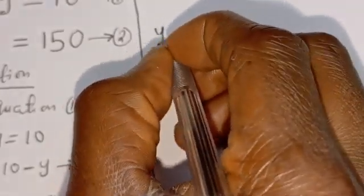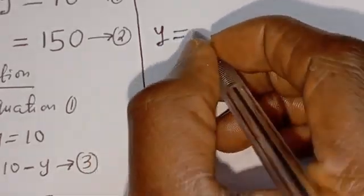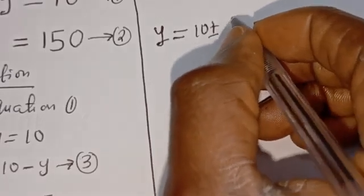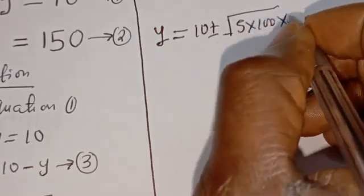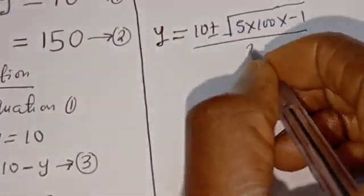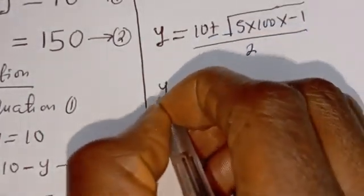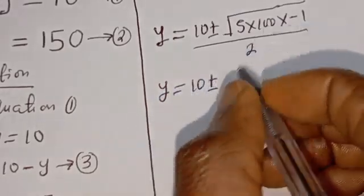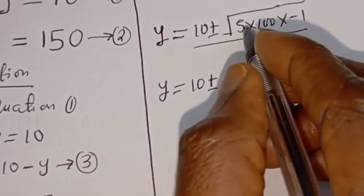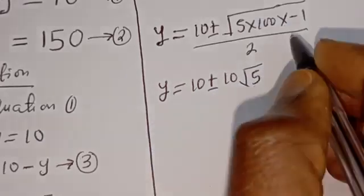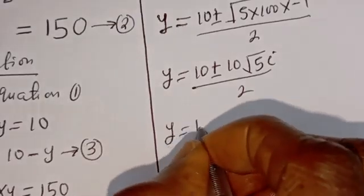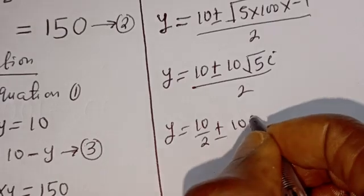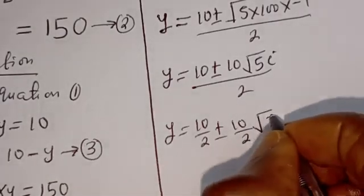From here, Y equals 10 plus or minus the square root of minus 500, which can be written as square root of 5 times 100 times minus 1, divided by 2. So Y is equal to 10 plus or minus square root of 100, which is 10, times square root of 5, times square root of minus 1, that is i, divided by 2.